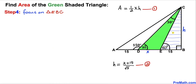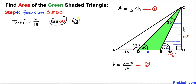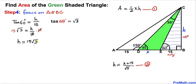Now let's focus on triangle EBC with the angle of 60 degrees. The opposite side is H and the adjacent side is 15. Applying tangent: tangent of 60 degrees equals H over 15. Since tangent of 60 degrees is square root of 3, we get square root of 3 equals H over 15. Multiplying both sides by 15, our H value turns out to be 15 times square root of 3.